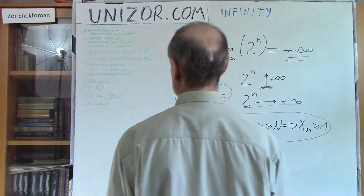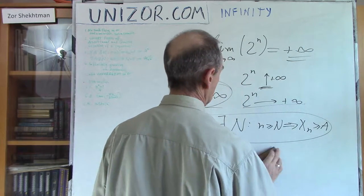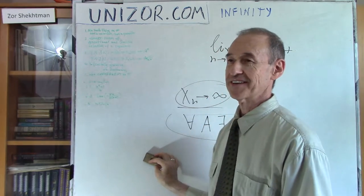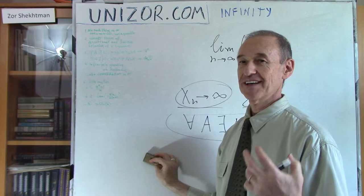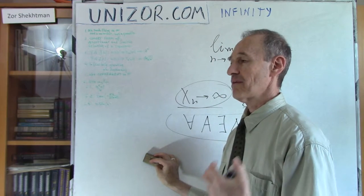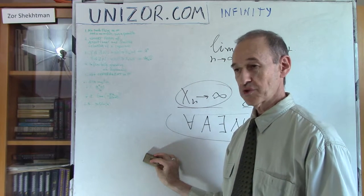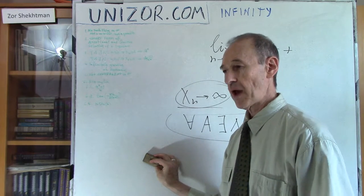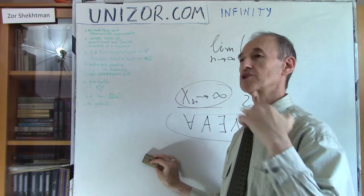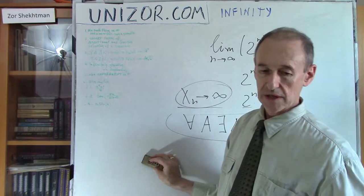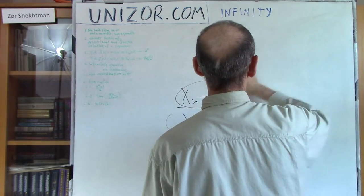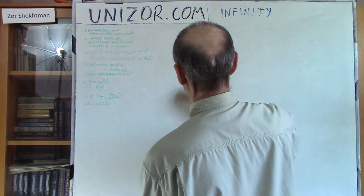So that's my explanation of what infinity is. And let me repeat: there is no such thing as infinity. It's not a number. It's basically the property of a certain process which is growing in such a way that no matter what border we establish, the sequence will be above that border — or below it if decreasing. It's limitless growing or limitless decreasing.